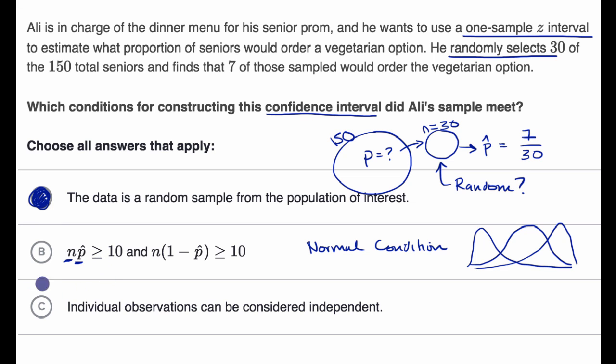Well, another way to think about this is our successes in our sample need to be greater than or equal to 10. And our failures need to be greater than or equal to 10. Well, how many successes were there? There were seven. And you could even say, our n is 30, times our sample proportion is seven over 30, which is going to be seven. So our successes is less than 10, so actually we violate the normal condition.